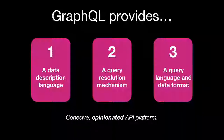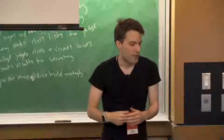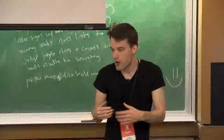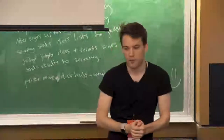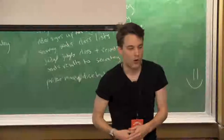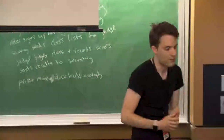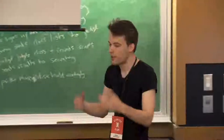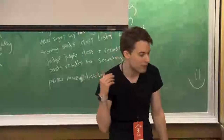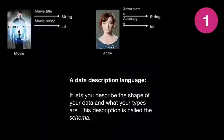GraphQL provides three things cohesively together — opinions on what all APIs kind of need to do. The first is a data description language, a way of specifying the things you want to talk about in your API. The second is a query resolution mechanism, a way to link the stuff you want and a way to get that — say, fetch a movie from IMDB or a comment from Disqus. And the last thing is a query language and data format, which allows clients on iOS apps and web apps to send requests.